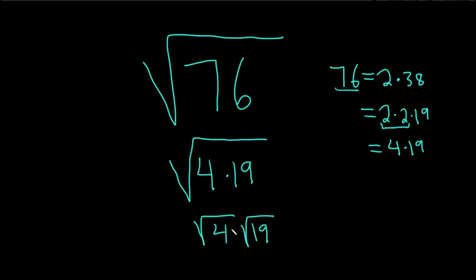So we can break this up into square root of 4 times square root of 19. And the square root of 4 is 2. So this will be 2 square root of 19. And that would be the final answer.